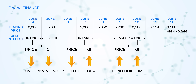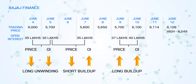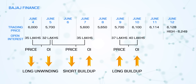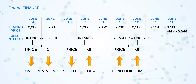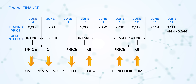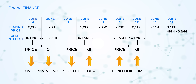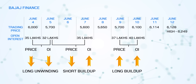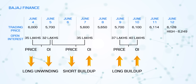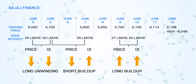When it's short unwinding, the prices may not go significantly higher from there — and that is exactly what happened on the last trading day. From 6,114 it went up only slightly to 6,128, and the change in open interest came down. Open interest has come down, so the market may not move significantly higher.